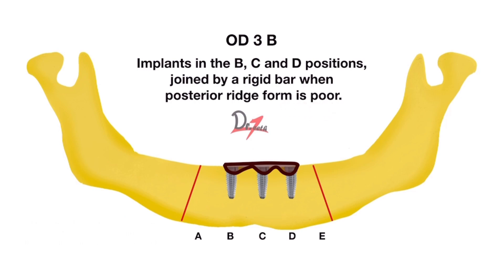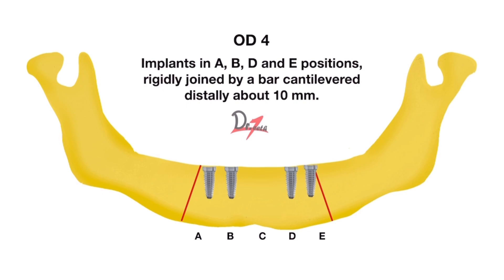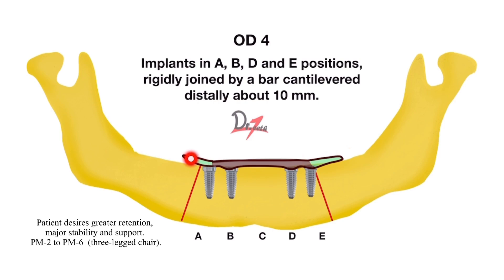Then we come to OD4. Here we have four implants placed at A, B, D, and E positions, joined by a bar, and it is cantilevered distally about 10 mm. The green portion in the animation signifies that it is cantilevered.